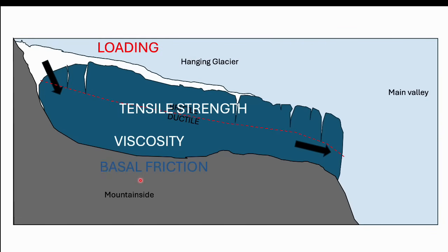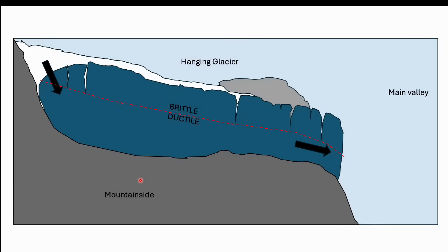What happens if we add extra load near the toe of the glacier? Say a rockfall puts some extra weight on the toe — that's going to increase the tension in this region, increase the flow rate, and as the flow rate increases, the brittle-ductile transition goes deeper, so you get more cracking. These crevasses will propagate downwards under this extra loading and that could quite easily cause failure of the glacier.